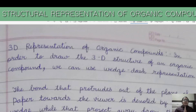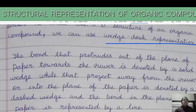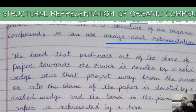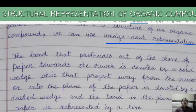Next is the three-dimensional representation of organic compounds — this is very important. In order to draw the 3D structure, we use wedge-dash representation. The bond that protrudes out of the plane of the paper — for example in the methane structure, which has a tetrahedral arrangement, one hydrogen bond goes under the paper and another comes toward the viewer. We need to represent this three-dimensionally on a flat paper.